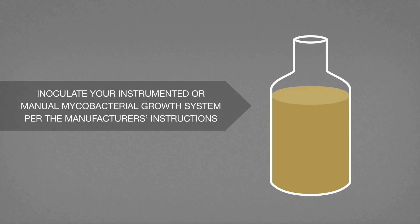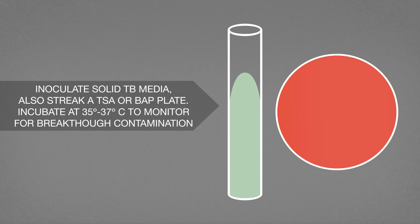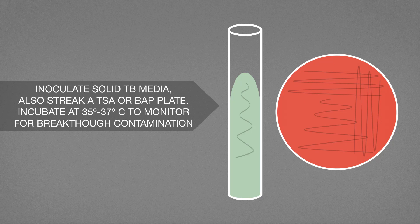Inoculate your instrumented or manual mycobacterial growth system per the manufacturer's instructions. Inoculate solid TB media. Also, streak a tryptic soy agar or blood agar plate and incubate at 35 to 37 degrees Celsius to monitor for breakthrough contamination.